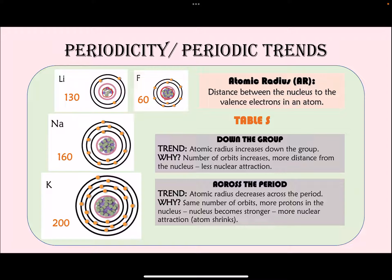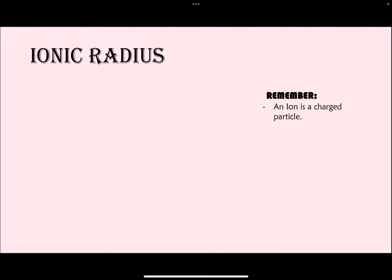Specific values for atomic radius are given in Table S. For example, going down the group you might see 130, 160, 200, showing they are increasing; across the period they decrease. One important note: these are called periodic trends for a reason — they work in most cases, but there can be a few exceptions. You might see some elements going across a period where the atomic radius increases instead of decreasing, so keep that in mind.